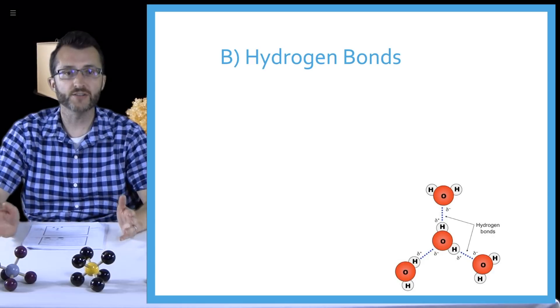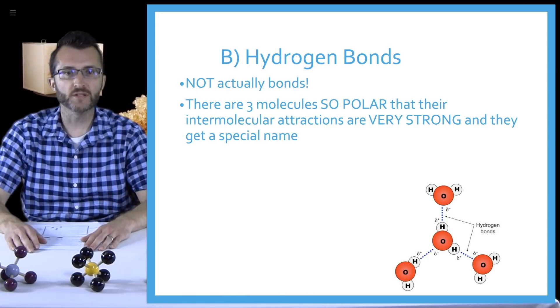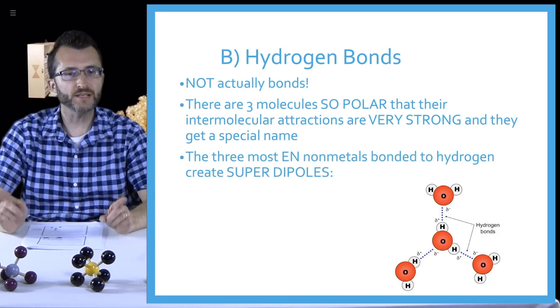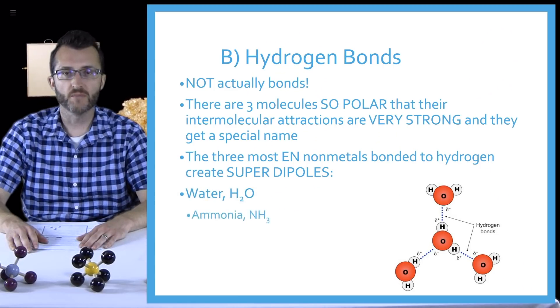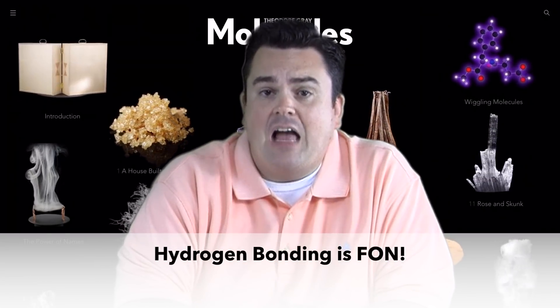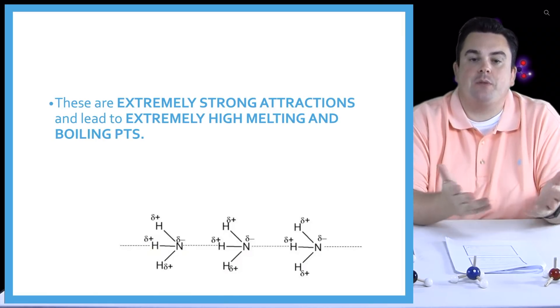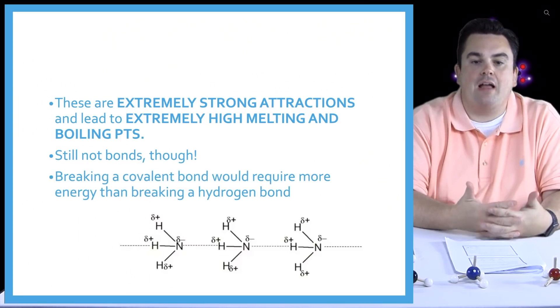Continuing with polar molecules, we have hydrogen bonds — but they're not actually bonds. Three molecules are so polar that their intermolecular attractions are very strong and get a special name. The three most electronegative non-metals bonded to hydrogen create super dipoles: water (H2O), ammonia (NH3), and hydrogen fluoride (HF). A nice way to remember them is FON — fluorine, oxygen, or nitrogen. These are extremely strong attractions leading to extremely high melting and boiling points. Breaking a covalent bond would still require more energy than breaking a hydrogen bond.